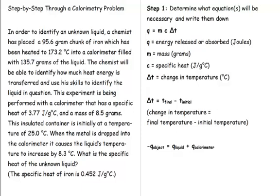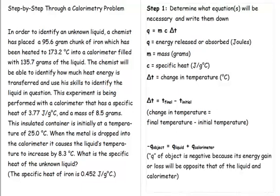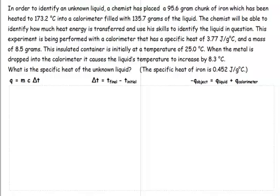To relate the heat energy released by the object and absorbed by the liquid in the calorimeter, we will need this equation: negative Q object equals Q liquid plus Q calorimeter. Notice that the Q of the object is negative because its energy gain or loss will be opposite that of the liquid in the calorimeter. Now we'll rearrange the equations and move on to step two.